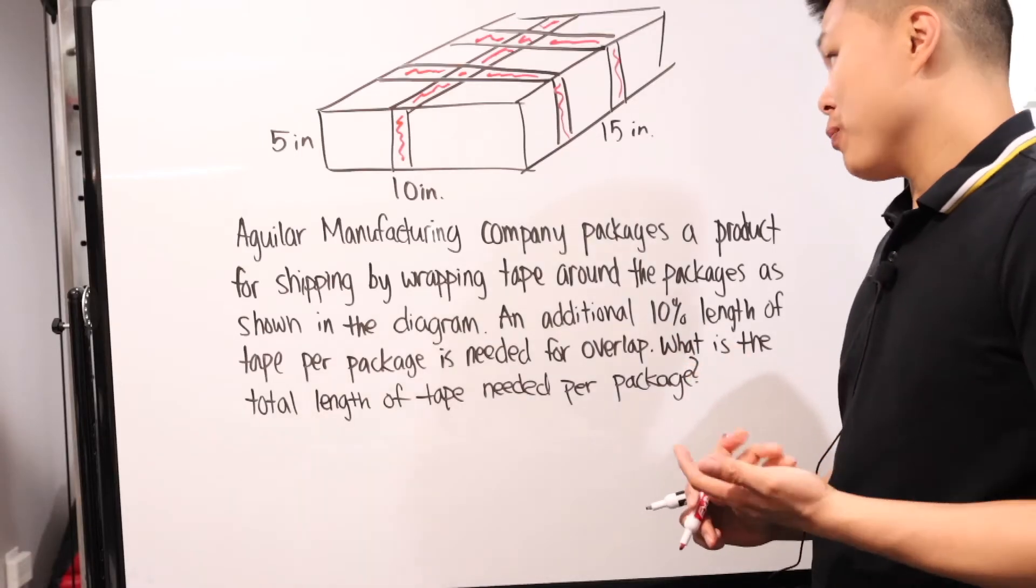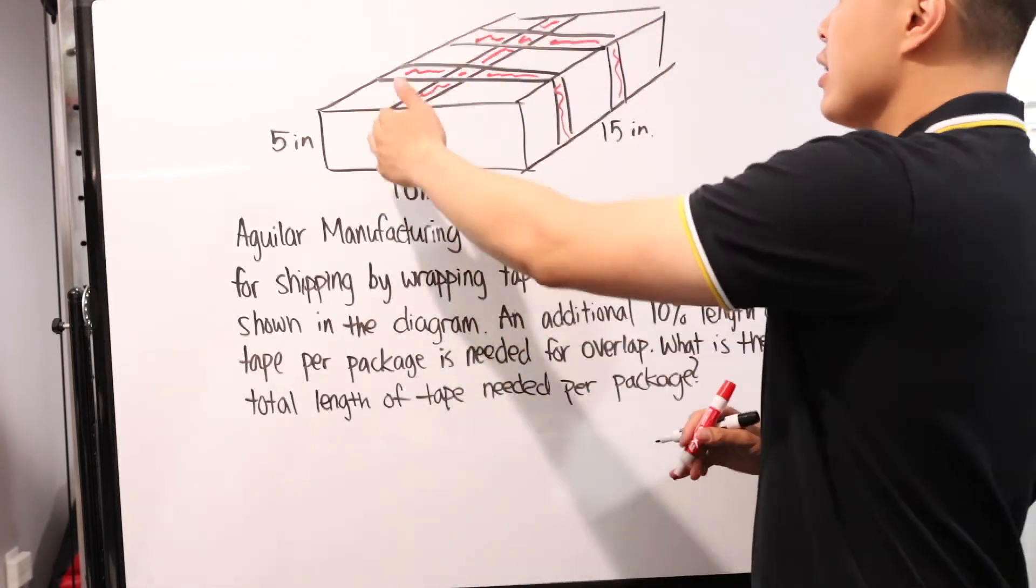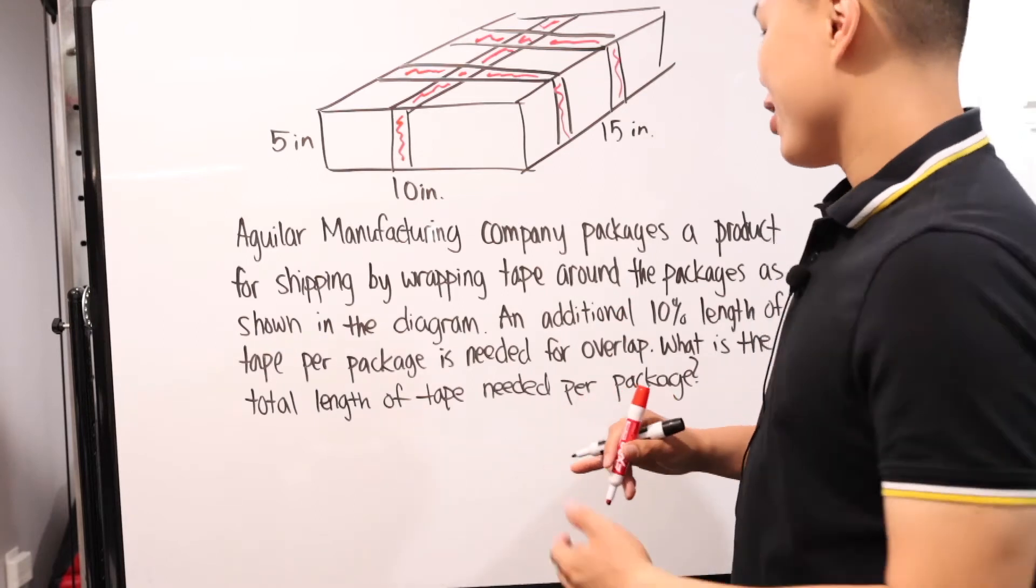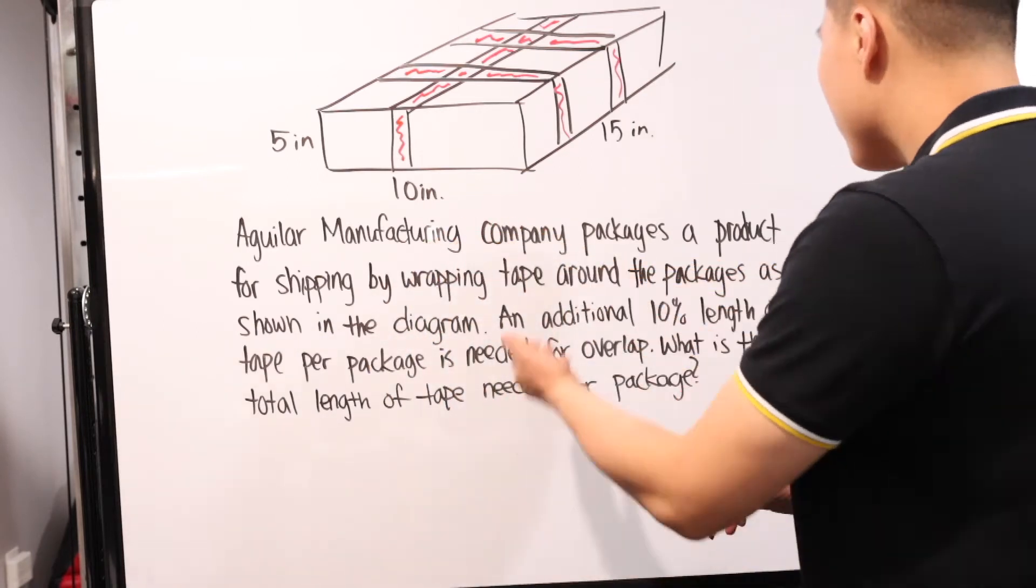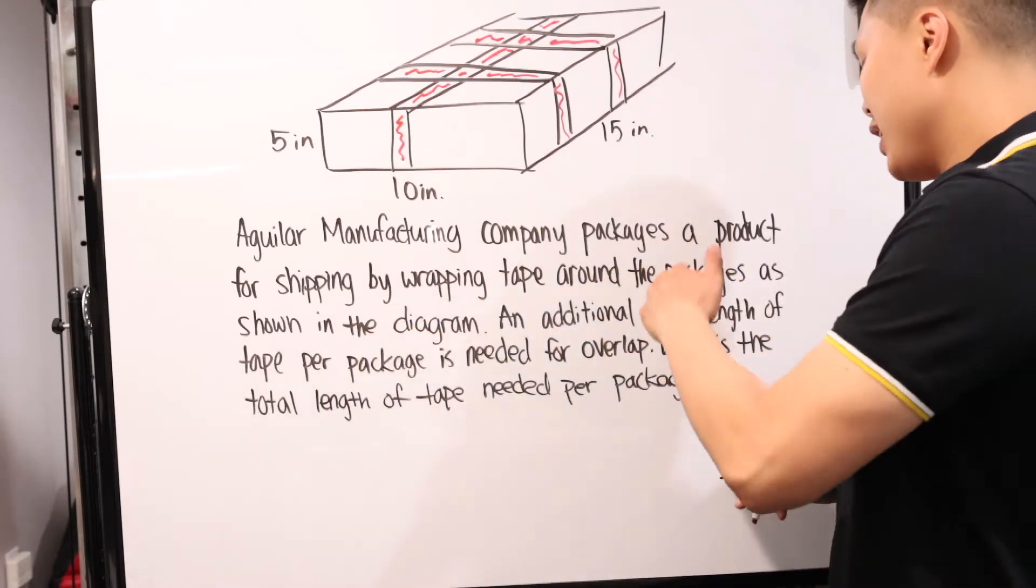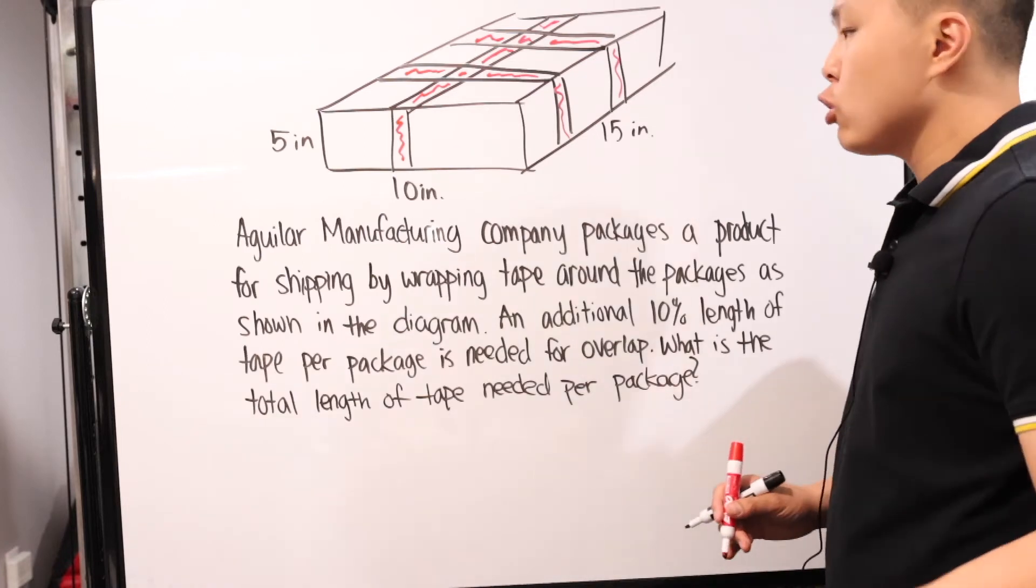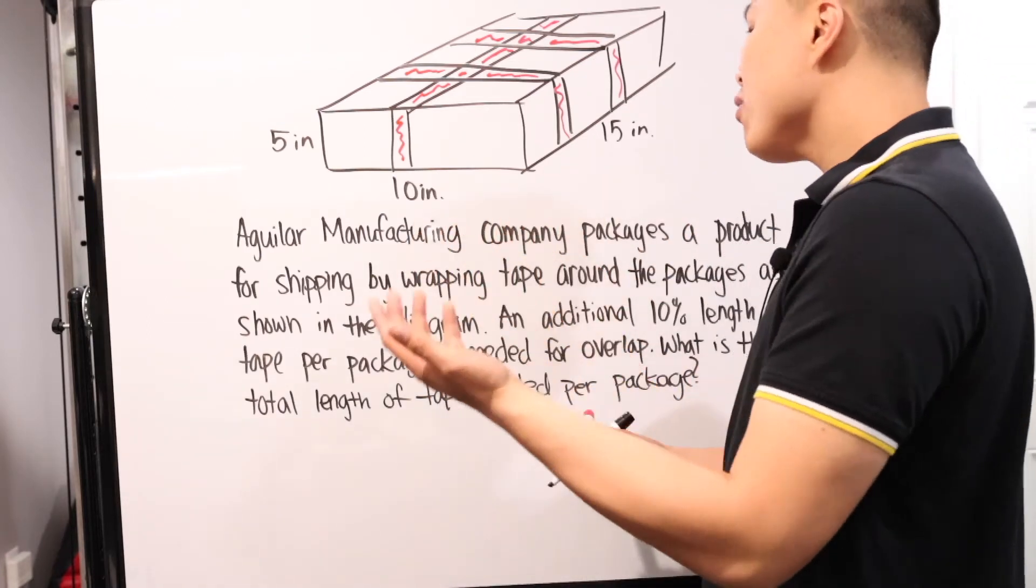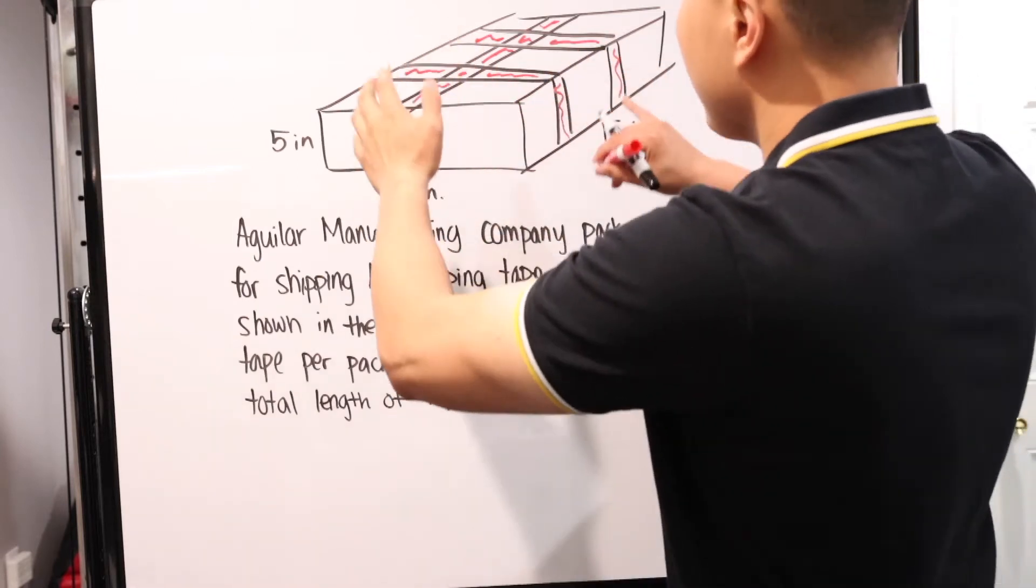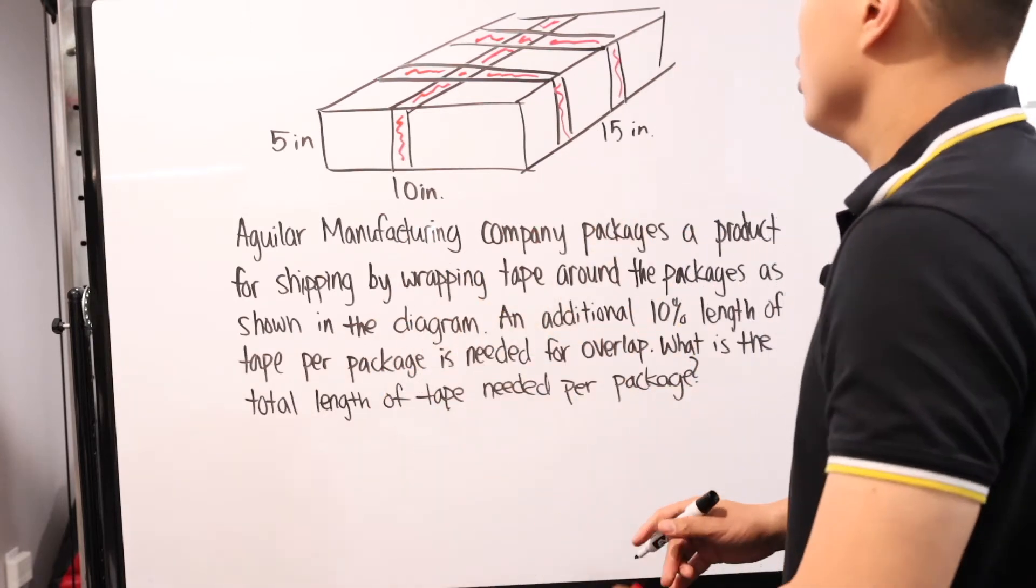Here's our next problem. Hopefully this picture makes it a little more clear. I'm trying to add the little bedazzles to make it easier to see. These are the tape that this problem is talking about. Aguilar Manufacturing Company packages a product for shipping by wrapping tape around the packages as shown in the diagram. An additional 10% of the length of tape per package is needed for overlap. What is the total length of the tape needed per package?